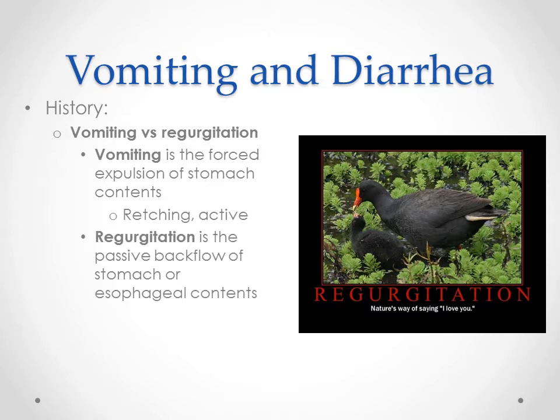Vomiting is what you think of — it's a forced expulsion of stomach contents. When vomiting is happening, you know it's coming. The animal retches and makes those noises; there's an active abdominal contraction, and then the vomit comes up after a few retches. Regurgitation, on the other hand, is very passive — it just happens. The patient has no retching, no abdominal contractions — all of a sudden some stuff just comes out.